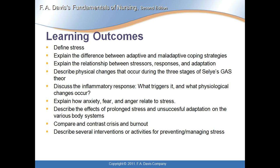The learning outcomes for this chapter are: define stress; explain the difference between adaptive and maladaptive coping strategies; explain the relationship between stressors, responses, and adaptation; describe physical changes that occur during the three stages of the General Adaptation Syndrome — I believe it's pronounced Sealy's, but I'm not quite sure. We'll discuss the inflammatory response, what triggers it, and what physiological changes occur; explain how anxiety, fear, and anger relate to stress; describe the effects of prolonged stress and unsuccessful adaptation on the various body systems; compare and contrast crisis and burnout; and describe several interventions or activities for preventing and managing stress.